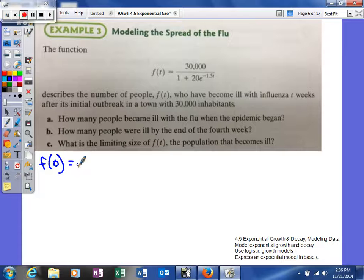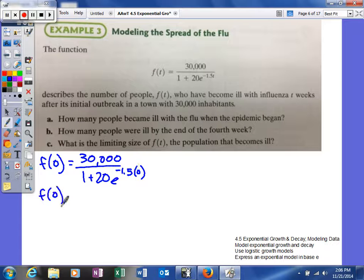We're going to plug in 0 for our time. So we'll get 30,000 divided by 1 plus 20e to the negative 1.5 times 0 power. This is obviously 0. e to the 0 power is 1, so 20 times 1 is 20. This is really 30,000 divided by 21.